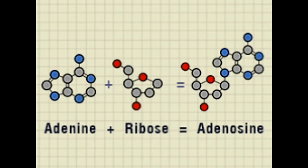The terms adenine and adenosine are often used interchangeably to refer to each other, however they differ with respect to their chemical structure and the other biomolecules that they interact with. We compare these molecules and elucidate the difference between them.